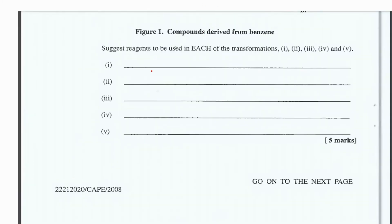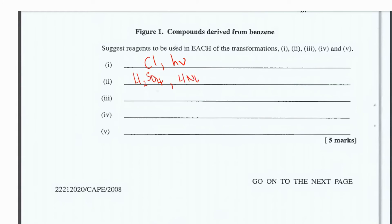Let's go ahead and fill in our answers. In part one, going from methylbenzene to one chloromethylbenzene, we need chlorine and energy in the form of UV light. In part two, forming nitrobenzene from benzene, we need our nitronium ion, and to form that we need sulfuric acid and nitric acid.